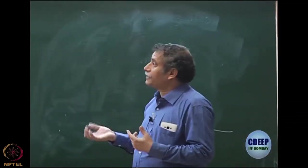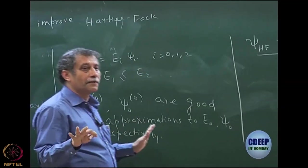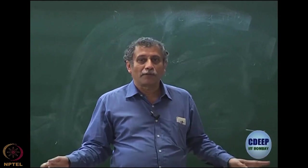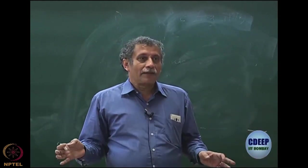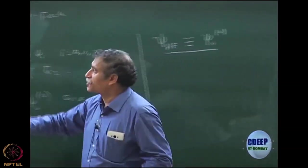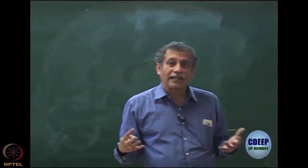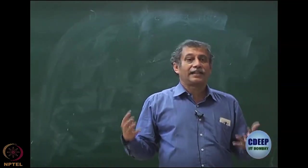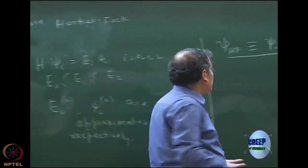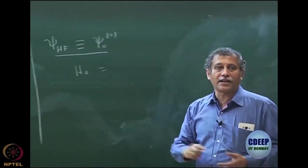So I can write ψ_HF as ψ₀⁰ and then I should be able to identify H0. Can I rethink in reverse: ψ₀⁰ which is ψ_HF is not an eigenfunction of H — otherwise quantum chemistry would be over. So we have to find out whose eigenfunction it is, because that will be my H0. If I can identify a Hamiltonian whose eigenfunction is ψ_HF, then I can think of that as H0.